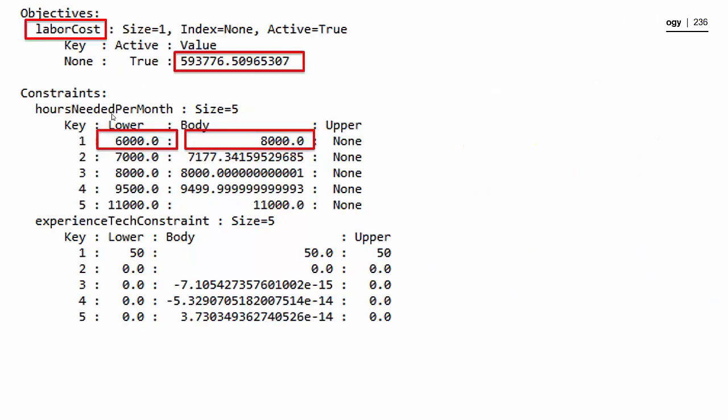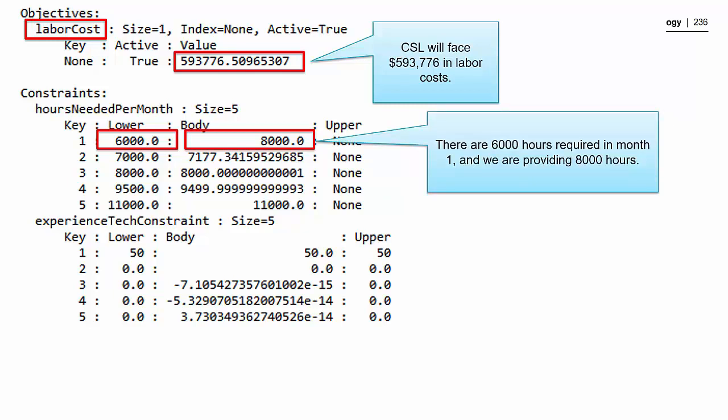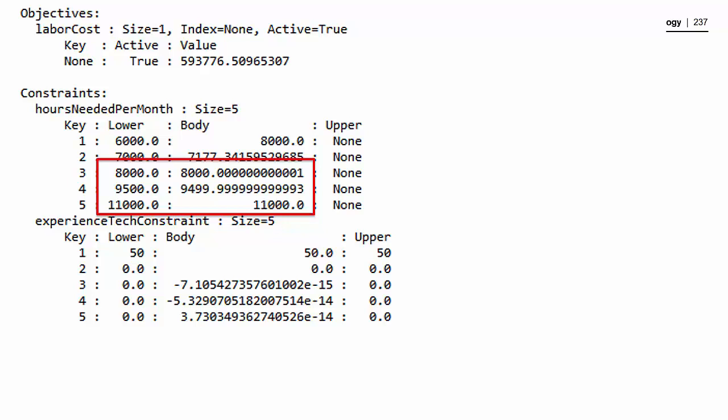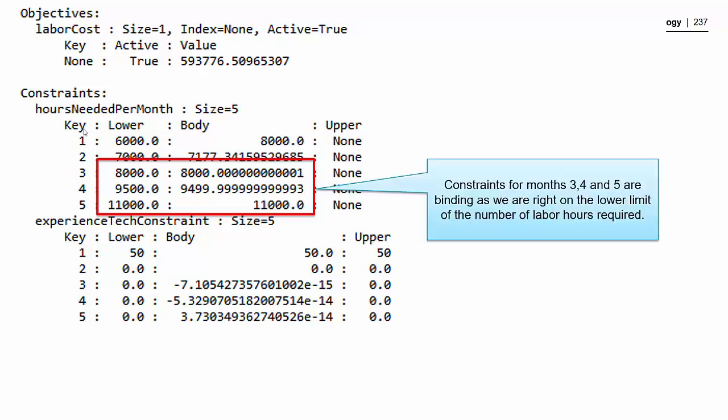And then if we take a second and look at the rest of our results, we see our objective function, which we called labor cost, has a value around $593,000. We see that for our hours needed per month constraint in month one, we only need 6,000 hours, but we have 8,000 hours right now available. And then some other information we could learn from these results is that in months three, four, and five, our hours needed constraints are binding, because we see that our lower limits are 8,000, 9,500, and 11,000, and that's the amount of labor we have. So we're right at those lower limits.